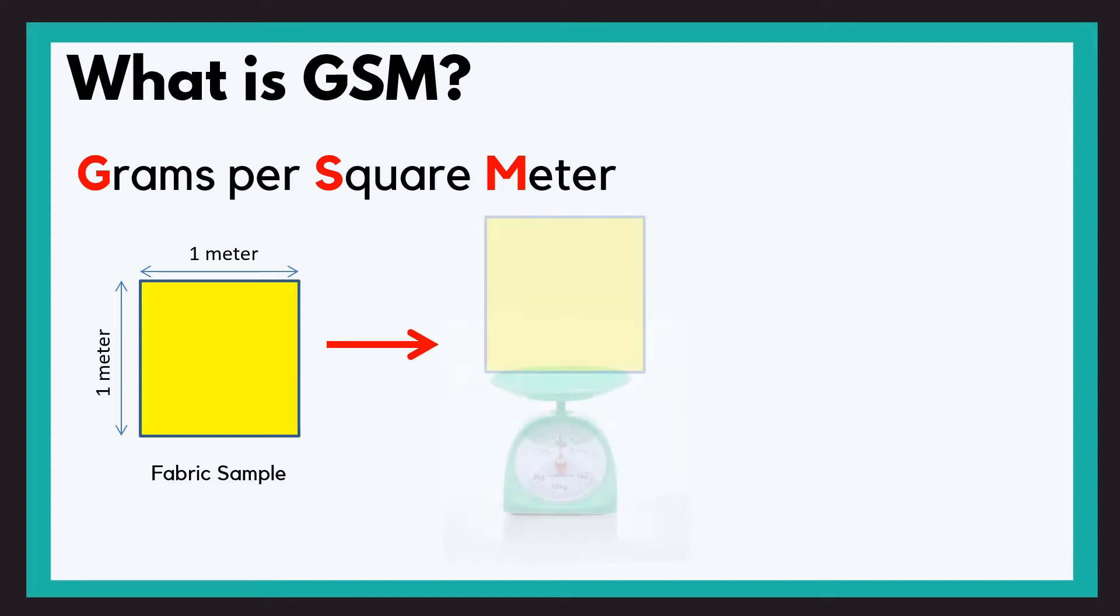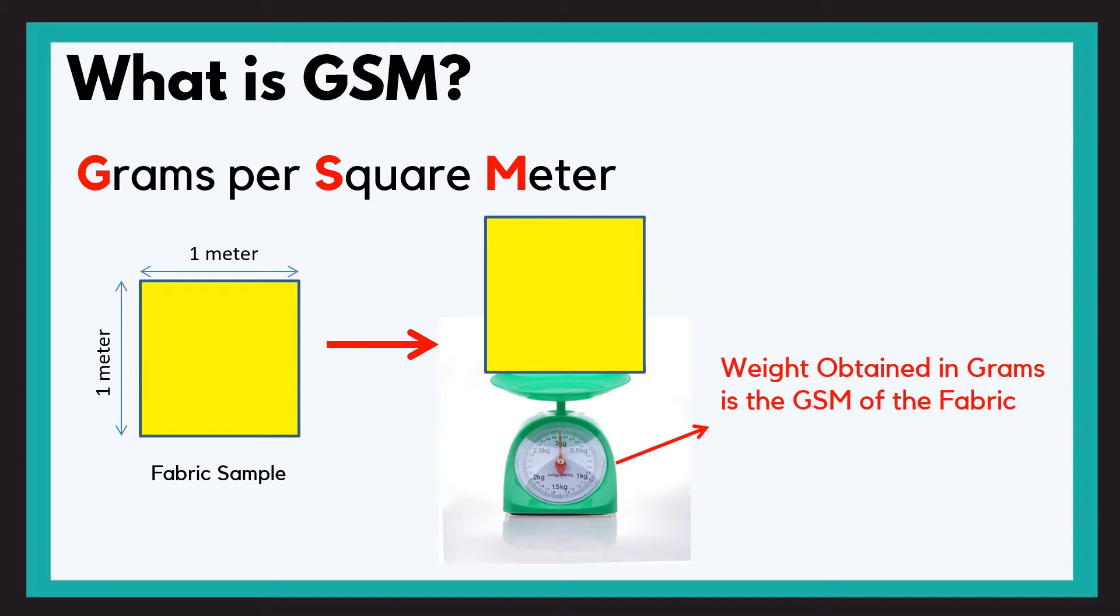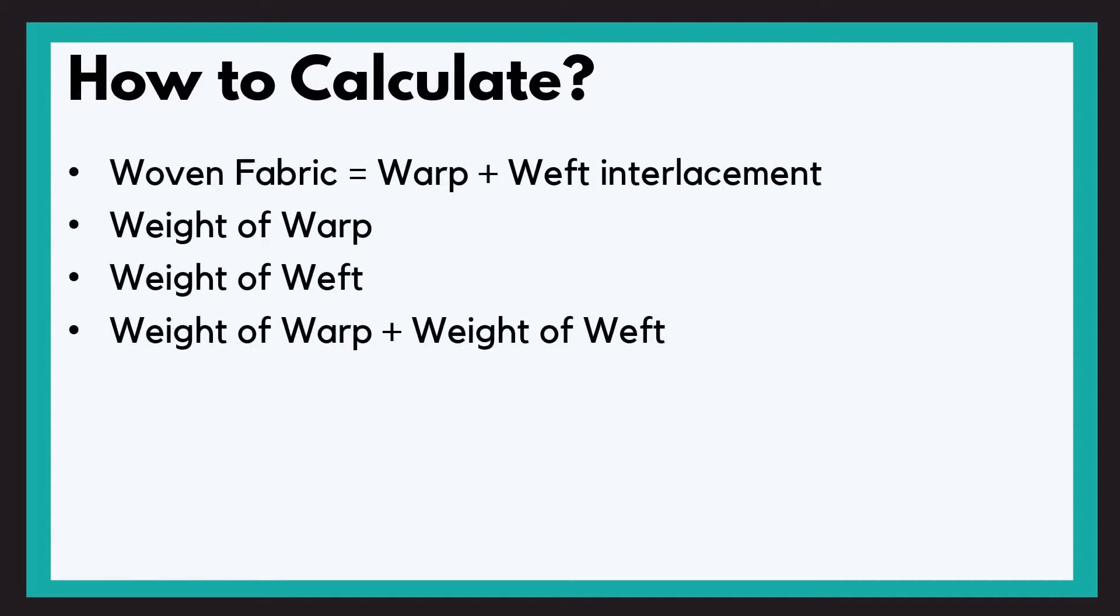Now if I put this sample in a weighing machine and weigh the weight, I will get it in grams. It will become the GSM of this fabric. The weight obtained in grams of 1 square meter of a fabric. So GSM is not only for textiles but it is also used for papers and many other things, but today we will just focus on textiles and particularly woven fabric.